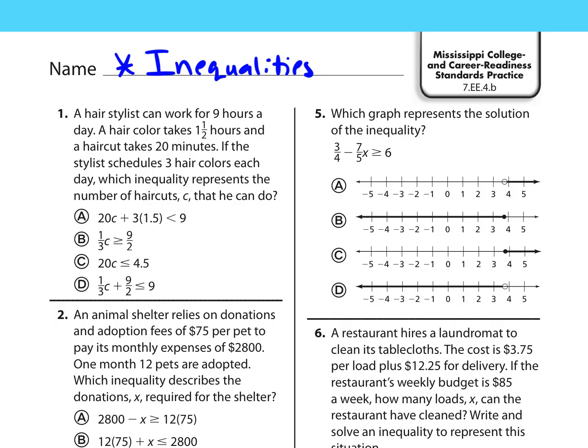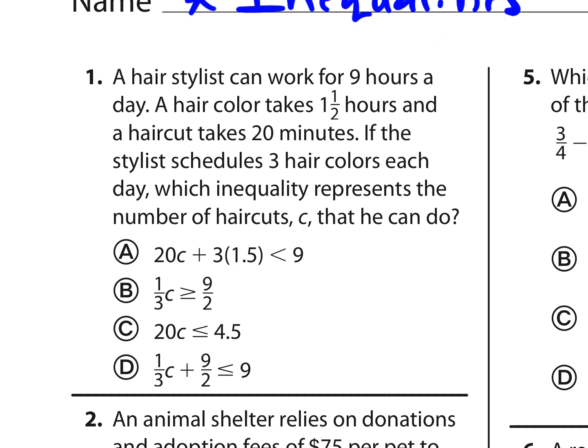Standard EE-4B is about inequalities. Let's start with the first problem. A hairstylist can work nine hours a day. A hair color takes one and a half hours, and a haircut takes 20 minutes. If the stylist schedules three hair colors each day, which inequality represents the number of haircuts C that he can do?